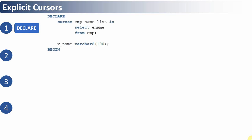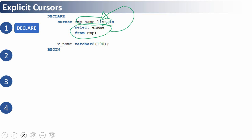The first step is declaration. Just like any variable — before using a variable we need to first declare it, and only after declaring it will you be able to use it. Very similarly, if you want to use a cursor, we need to declare it first. Declaration means specifying the name of the cursor and what is the select statement associated to it. For example, here I am associating a select statement 'SELECT ename FROM employee' to a cursor named emp_name_list.